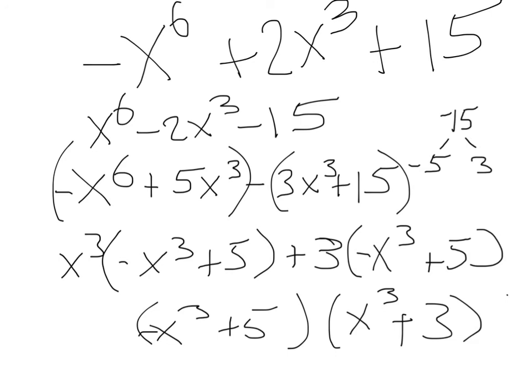For this one, you got negative x times 6 plus 2x cubed plus 15. And so I multiplied everything by negative 1 so that this would be positive. And then we re-multiplied it by negative 1 after we found negative 5 and 3 to get negative x to the 6 plus 5x cubed minus 3x to the 3rd plus 15.